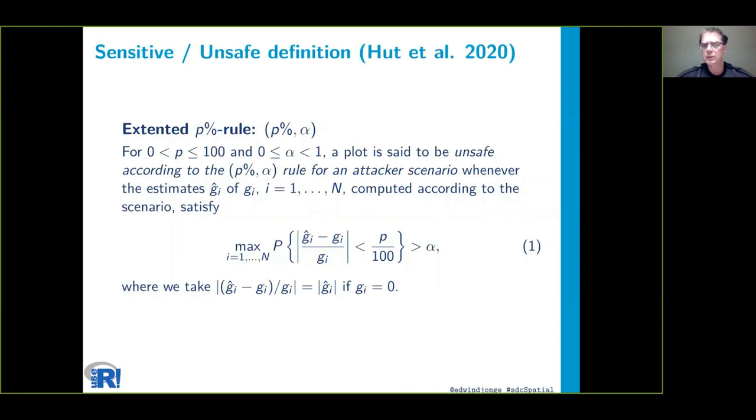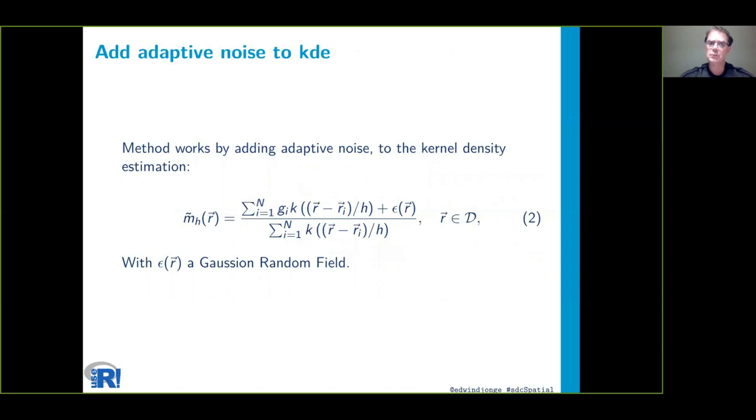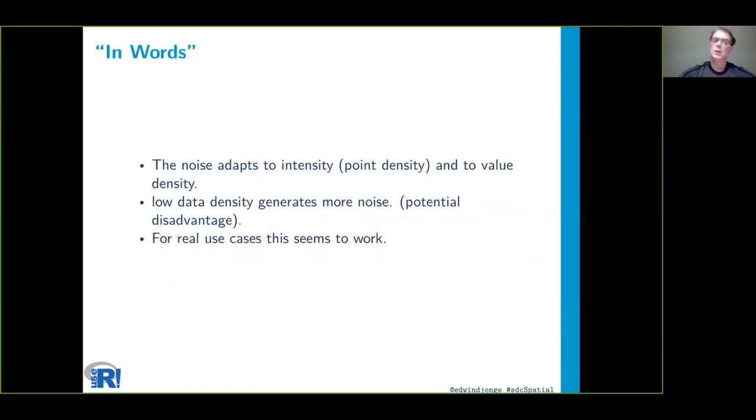We use some math to define what is sensitive and how to protect it. These are implemented in the package itself, using the N-percent rule. The method works by adding adaptive noise, so areas which are less populated contain more noise and highly populated areas contain less noise. The adaptation is from the covariance matrix. In words, the noise adapts to intensity and value density. Low density areas generate more noise, which can give some potential artifacts, but for real use cases this seems to work quite well.